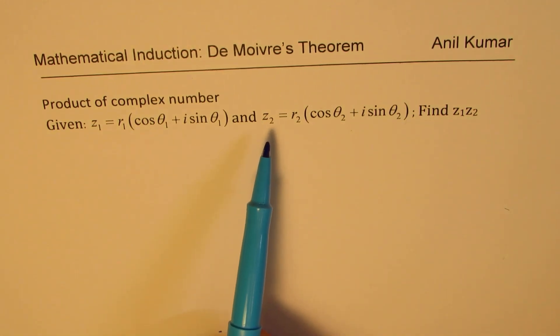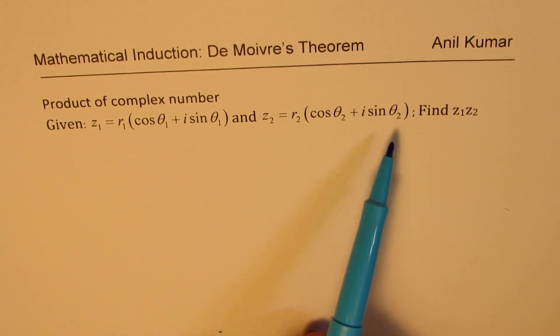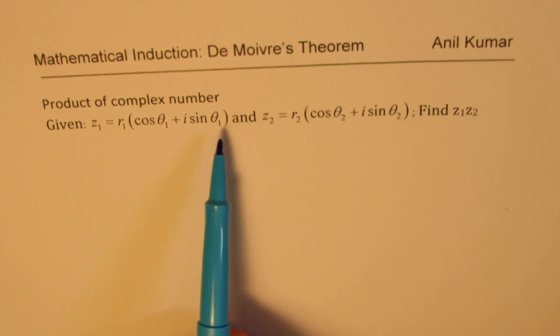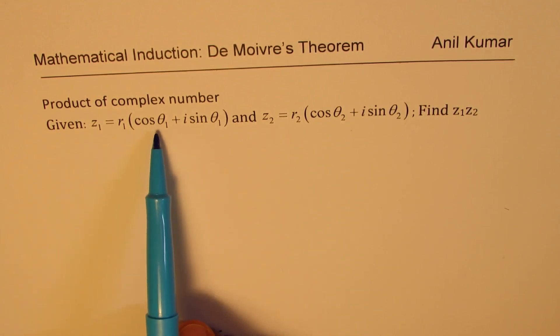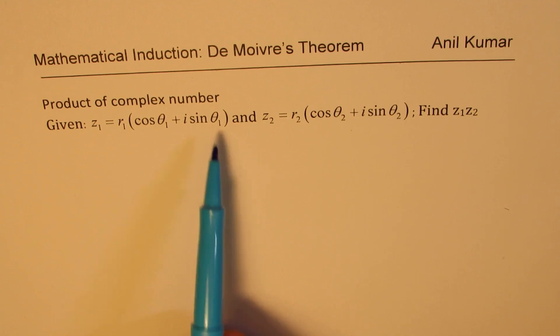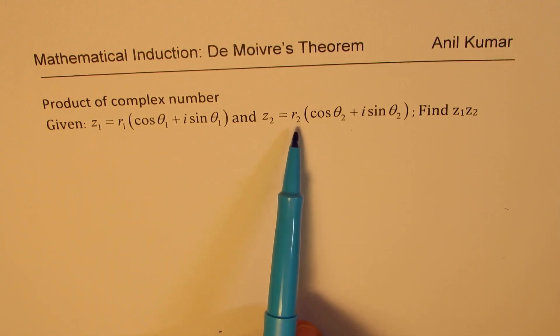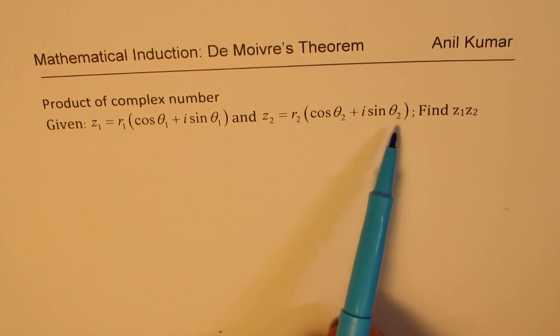With absolute values r1 and r2 and the arguments theta1 and theta2. These complex numbers can be written as z1 = r1(cos θ1 + i sin θ1) and z2 = r2(cos θ2 + i sin θ2).